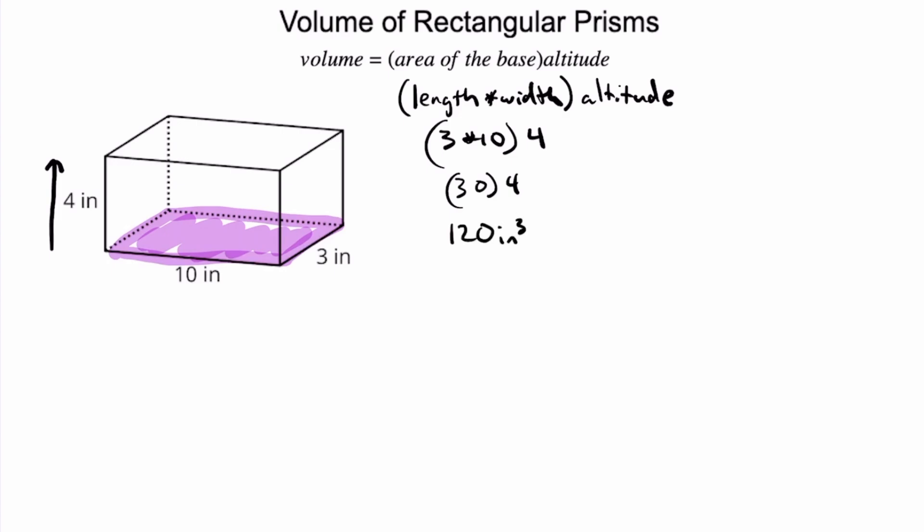When we think about volume, one thing that is helpful is to think of it in terms of layers. Especially when we're trying to figure out what the base is, and this is going to make more sense and be more important as we look at other types of prisms.